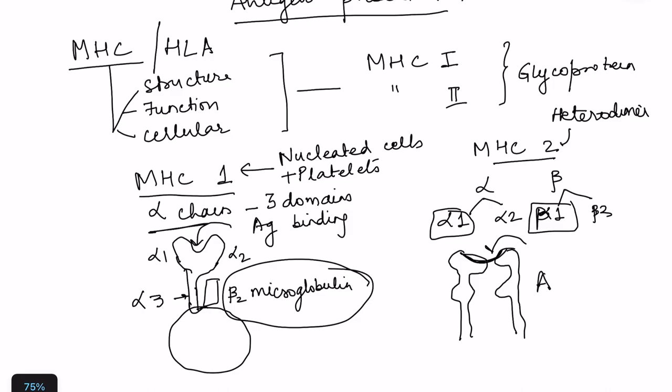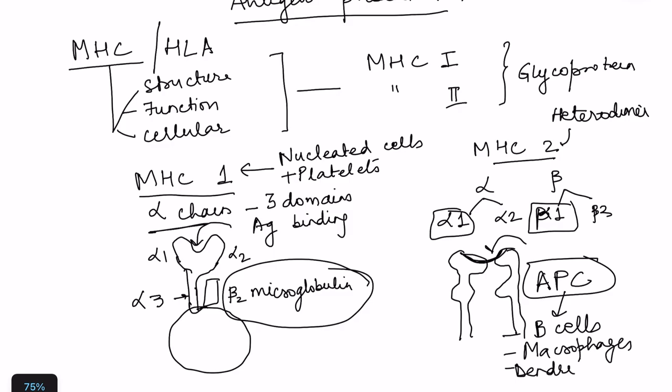Antigen presenting cells are cells with the specific function of presenting antigen to T cells. These include B cells, macrophages, and specialized dendritic cells. Dendritic cells are present in lymphoid tissue, lining various portals of entry for microorganisms - in spleen, in skin as Langerhans dendritic cells. Some intestinal epithelial cells can also act as antigen presenting cells.